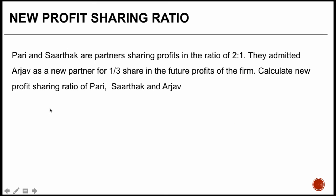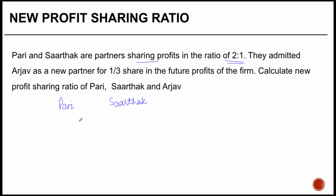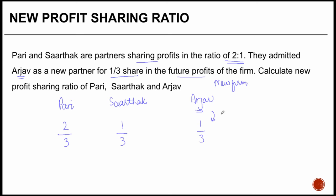In this example, Puri and Sarthak are partners sharing profits in the ratio of two is to one — Puri gets two-thirds and Sarthak gets one-third. They admit Arjav as a new partner for one-third share in the future profits of the firm. We need to find out what the shares of Puri and Sarthak will be in the new firm.